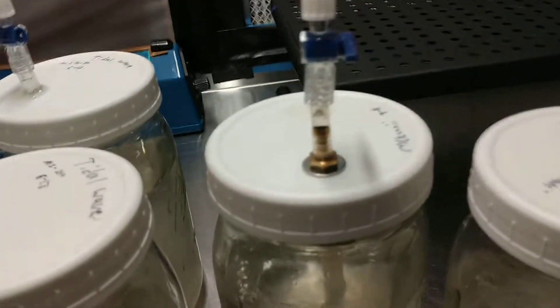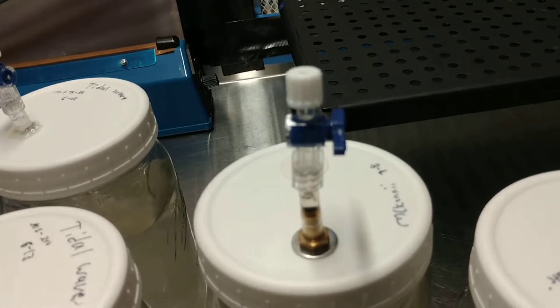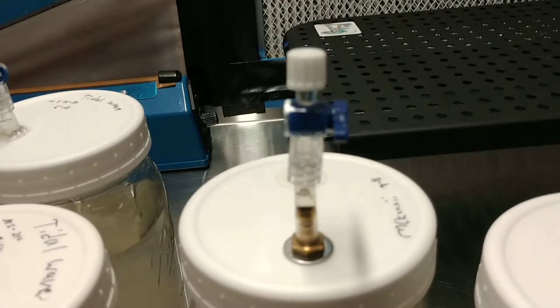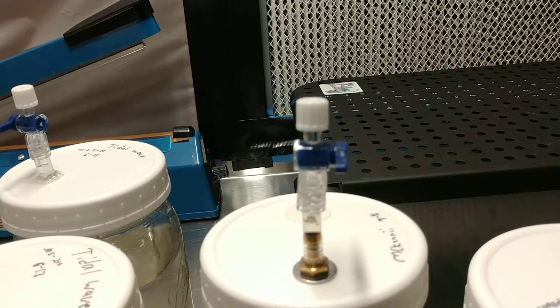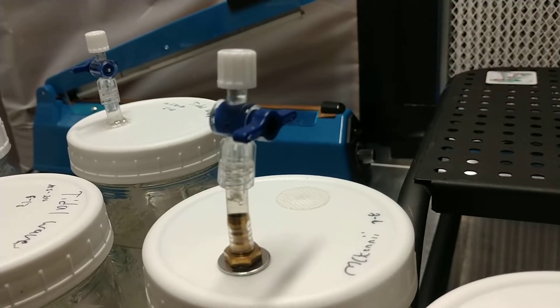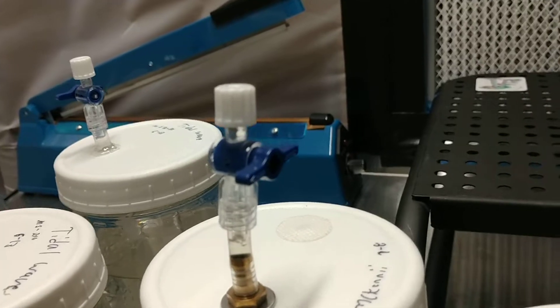So this is a lid we use. This allows you to draw out of it without sticking a needle into it. You just put the syringe on the top, turn the valve, pull it out, close the valve, you're done.